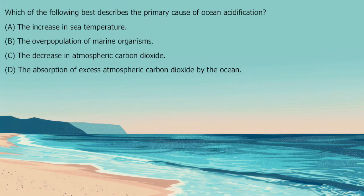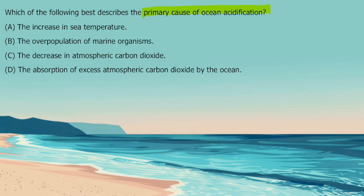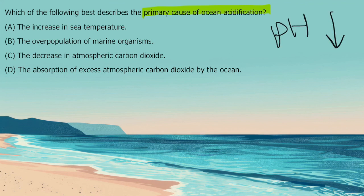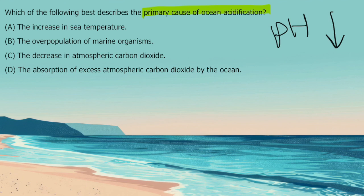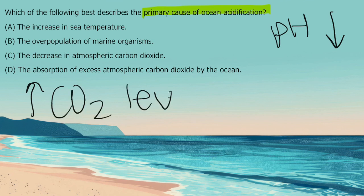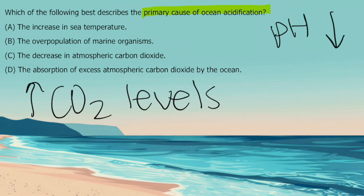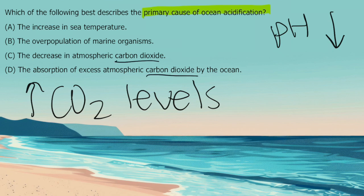Our third question reads: which of the following best describes the primary cause of ocean acidification? When we think about ocean acidification, the pH of the ocean is decreasing — it's becoming more acidic. Over the last 200 or so years, human activities, especially burning fossil fuels, have caused a rapid increase in carbon dioxide levels in our atmosphere. That increase in CO2 levels is the primary cause of ocean acidification. Two of the answer choices contain the phrase carbon dioxide, so those are likely what we're looking for.